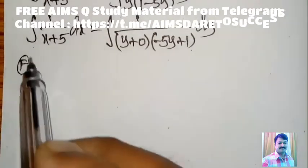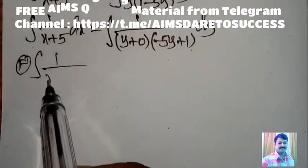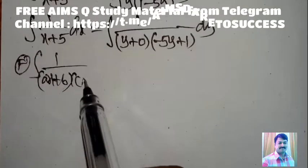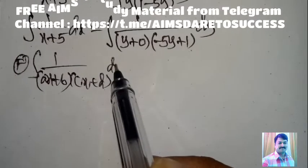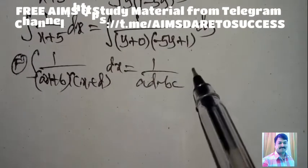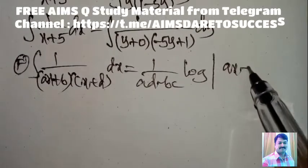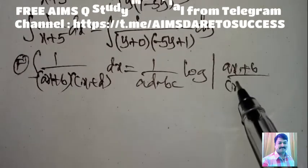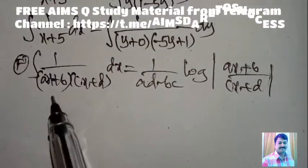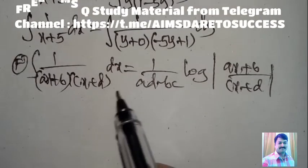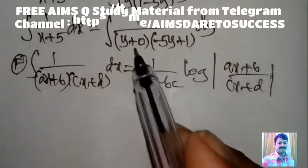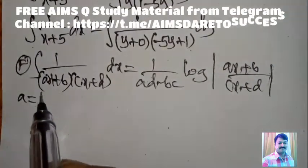I will write a short formula for students: integral of 1/[(ax + b)(cx + d)] dx = 1/(ad − bc) × log|ax + b / cx + d| + C.